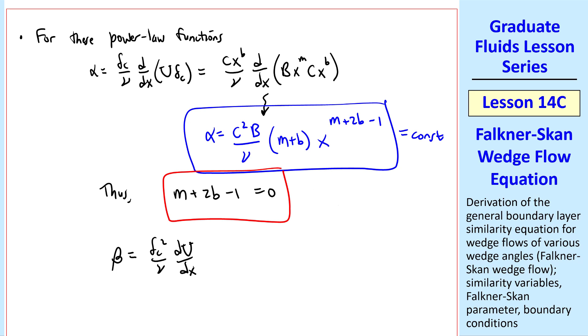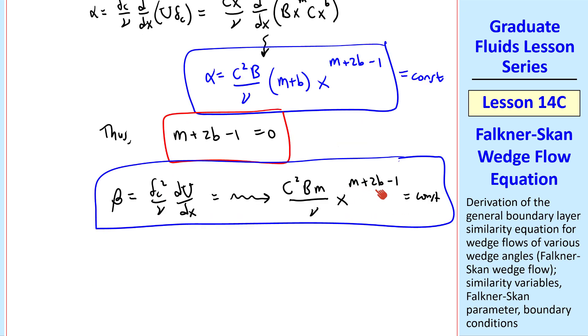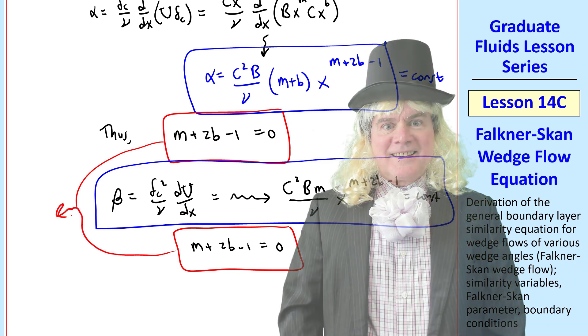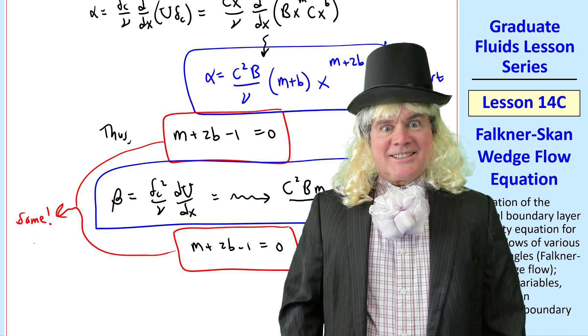Similarly for beta, when we plug in our power functions, and I'll skip some of the algebra, we get c squared B over nu, x to the m plus 2b minus 1, which also must be a constant. We make the same argument about this exponent. So m plus 2b minus 1 must equal 0. Notice that these two match. They're the same.